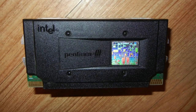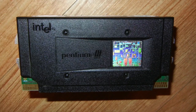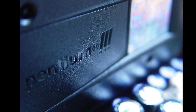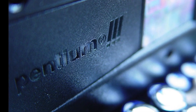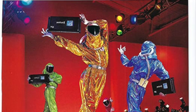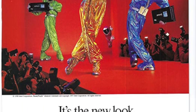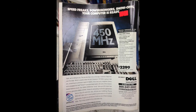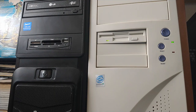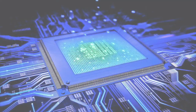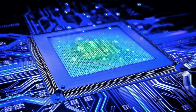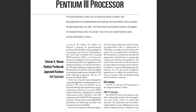The first Pentium 3 cores, released on February 26, 1999, were named Katmai and continued the single edge contact cartridge design similar to the late Pentium 2 chips that it was replacing. The highest speed Pentium 2 had the same clock speed as the lowest Pentium 3 at launch — a blazing fast 450 megahertz. In terms of differences, the P3 architecture had implemented a new processor instruction set called SSE, which stood for Streaming SIMD Extensions — SIMD being single instruction, multiple data.